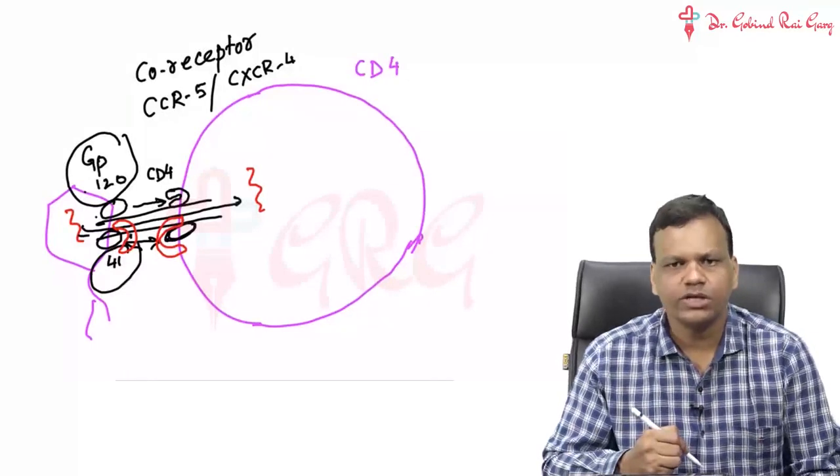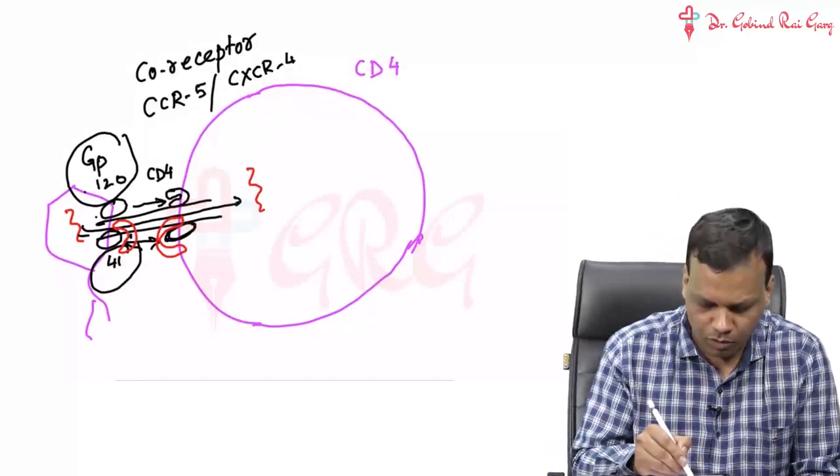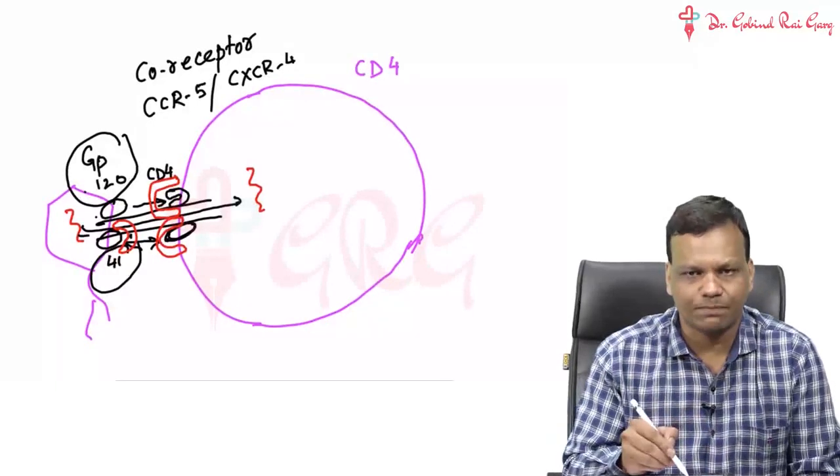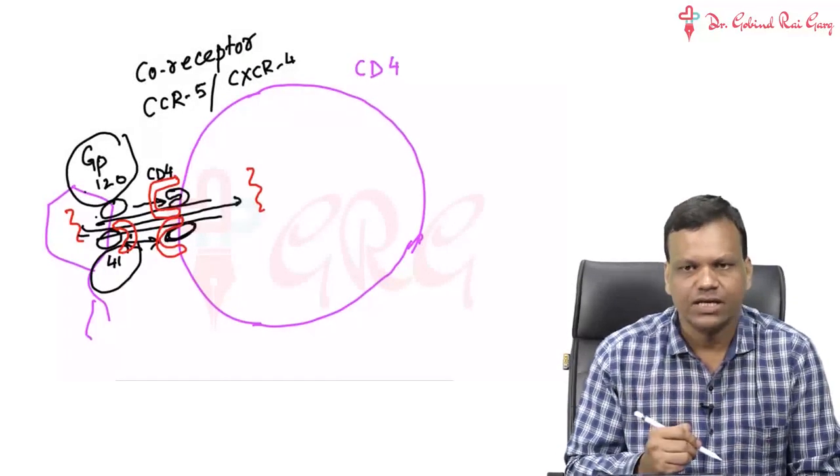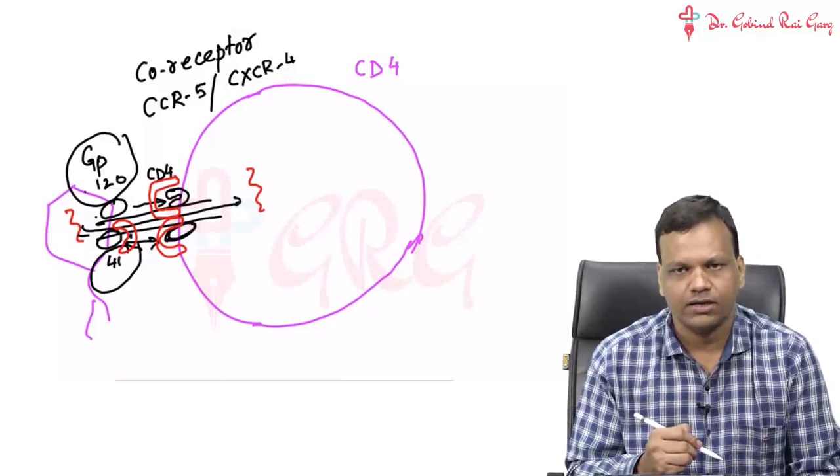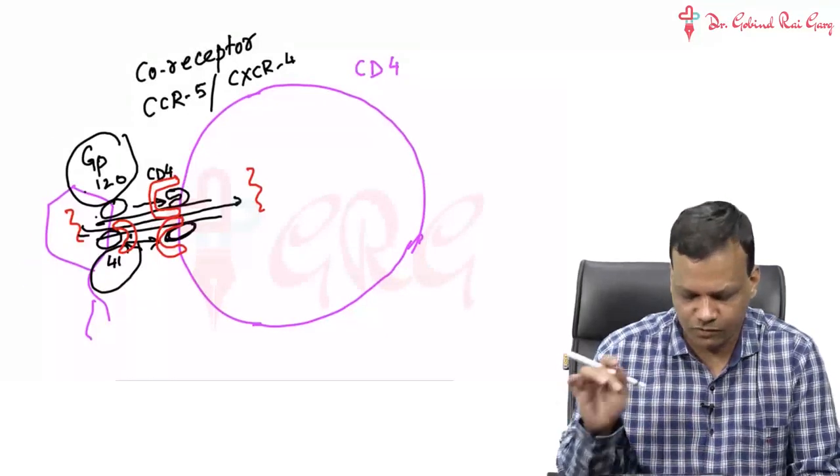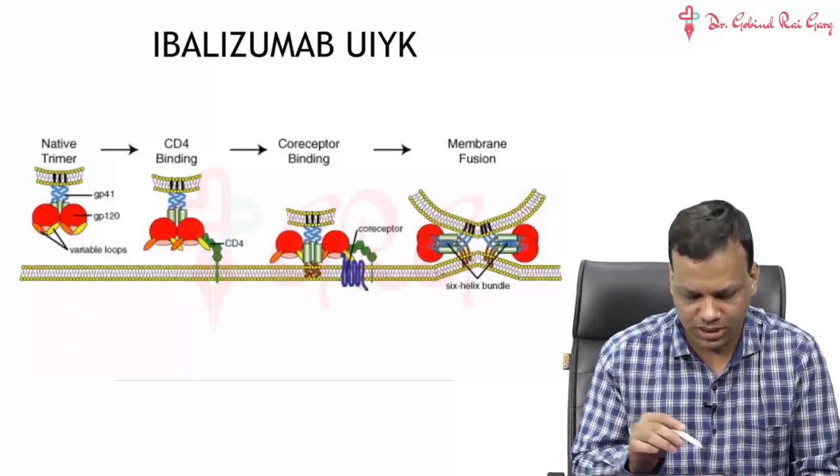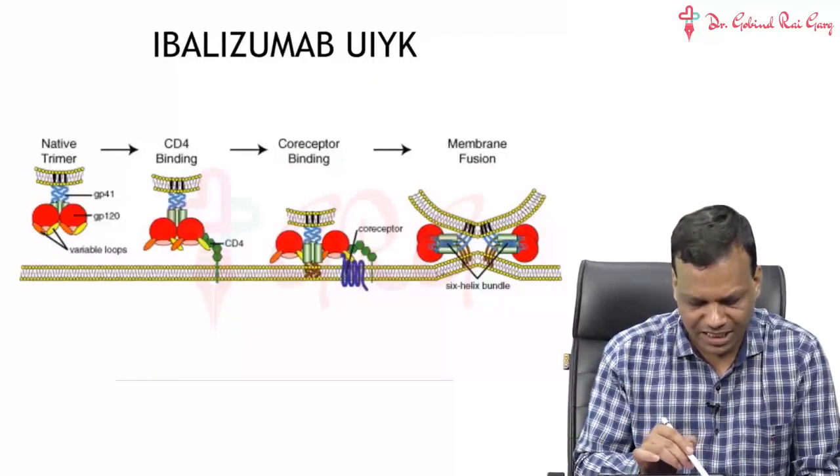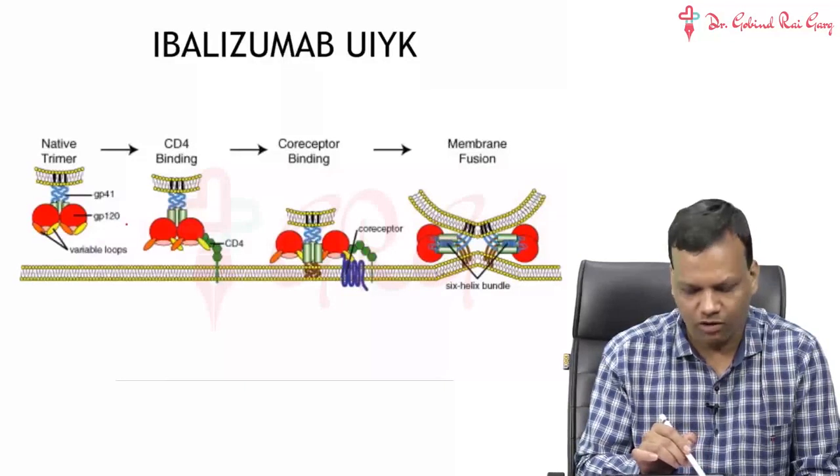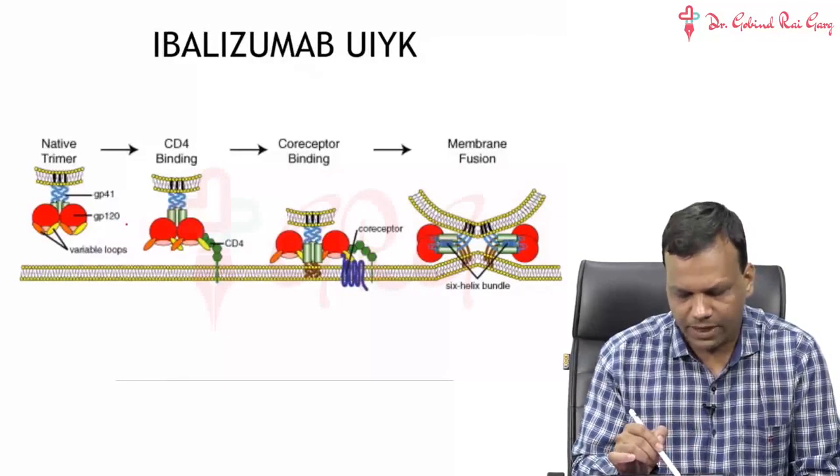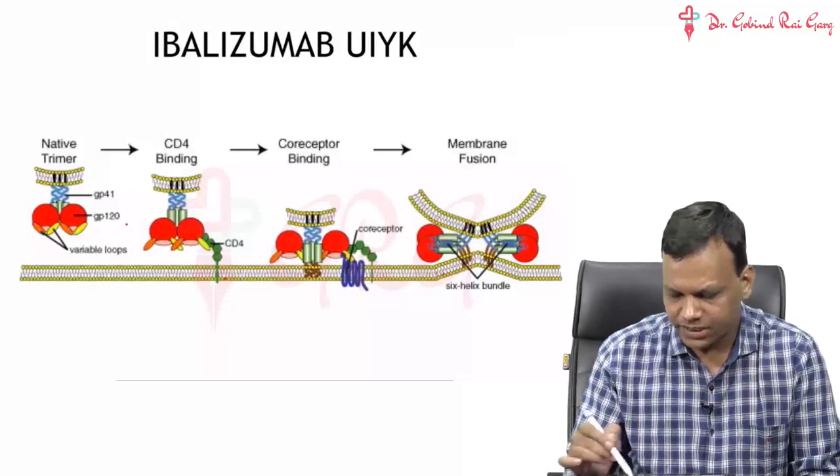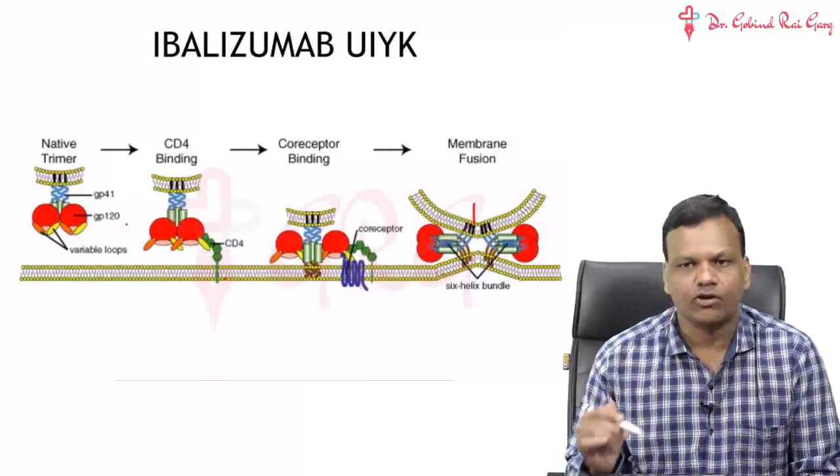The new drug we have formed is a monoclonal antibody against CD4 receptors. When CD4 receptors cannot bind HIV, then infection will not occur. So basically this is a new fusion inhibitor, the name is Ibalizumab. Normally on the HIV, there is glycoprotein 120 and 41. Glycoprotein 120 binds to CD4 cells that leads to binding of co-receptors, which leads to fusion of the membrane and entry of DNA.